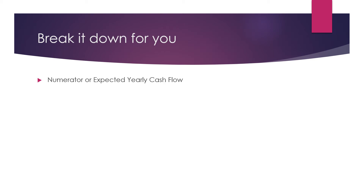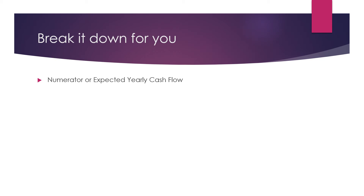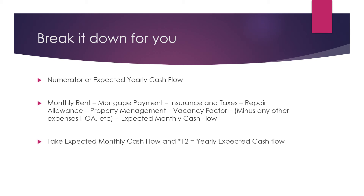Now the numerator — that's going to be the expected yearly cash flow. That's your monthly rent, and then you start subtracting. I subtract the whole mortgage payment — not just the interest, the whole thing, because I can't spend the mortgage pay-down. So: monthly rent minus mortgage payment, minus insurance and taxes, minus repair allowance, minus property manager, minus vacancy factor, and minus anything else your property may have, like HOA or other fees. That produces your expected monthly cash flow. I then take that monthly figure times 12 because I'm going for a yearly yield.